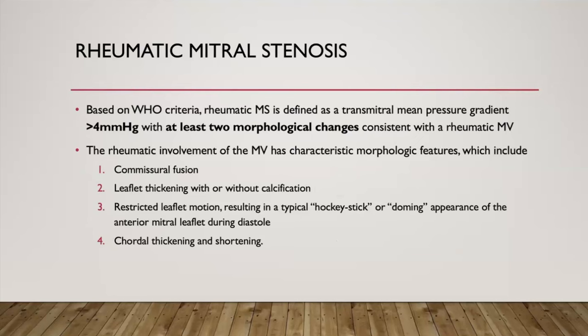Based on WHO criteria, rheumatic MS is defined as a transmitral pressure gradient of more than 4 mmHg with at least two morphological features. The hallmark morphological feature is fusion of the commissures. The second is leaflet thickening, which can be present with or without calcification. The third is restricted leaflet motion — specifically restricted posterior leaflet movement and restricted anterior mitral leaflet opening — which gives the classical doming or hockey stick appearance during diastole. There is also chordal shortening and thickening demonstrable on echocardiography.